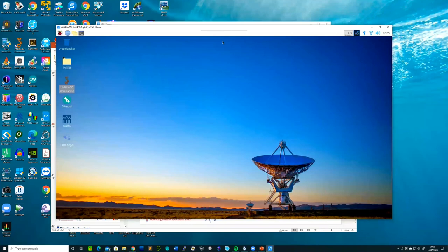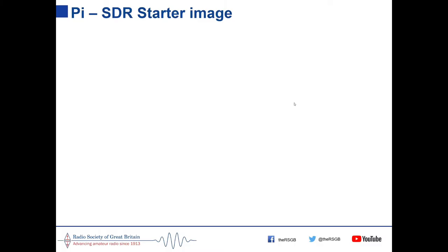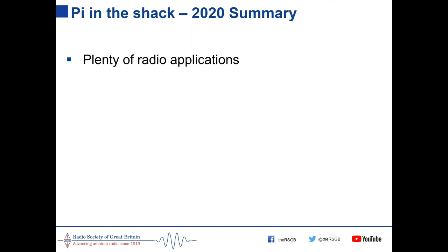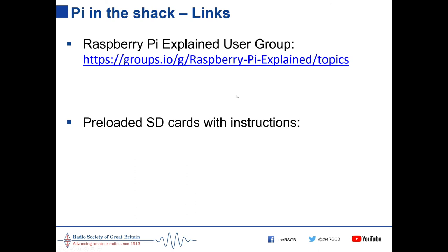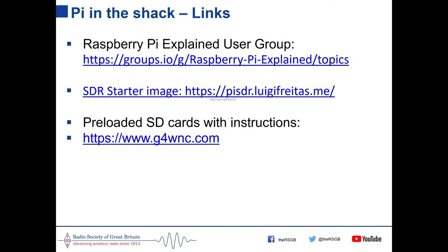Returning to the presentation for a summary: the Raspberry Pi has a huge range of radio applications, and only the surface has been scratched here. The Pi 4 has transformed the platform — it's so much more powerful and its previous bottlenecks have been overcome. It's also a great tool for learning programming, with many programming tools included and no fear of breaking the system since you can simply swap the SD card.